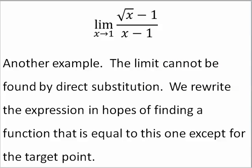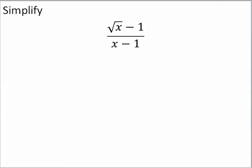Another example. This is also a limit that cannot be found by direct substitution. I can't just put 1 in for x. If I do that, I will end up with 0 over 0, which is what we call an indeterminate form. So we are going to rewrite the expression in hopes of finding a function that is equal to this one, except for the target point. So let's simplify this.